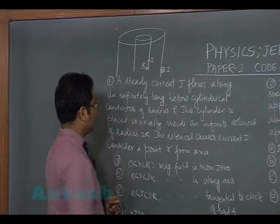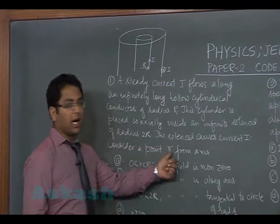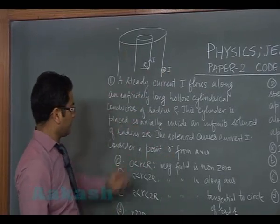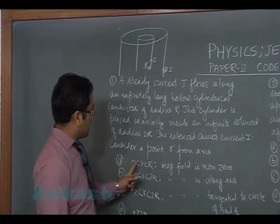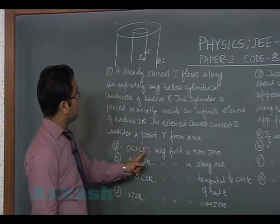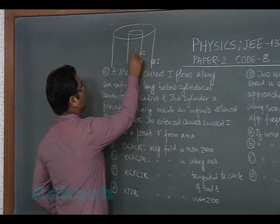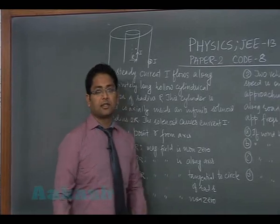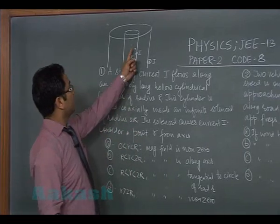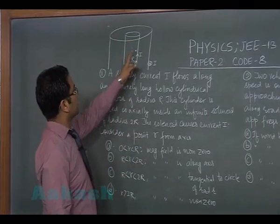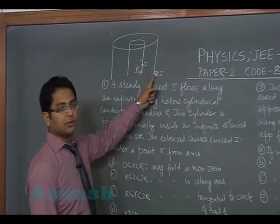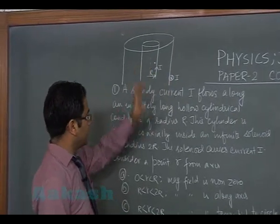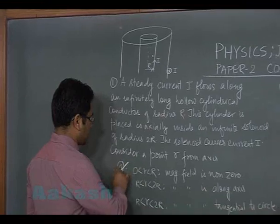Now we need to consider a point r from the central axis where r is greater than 0 and less than r. That means from the axis we are here somewhere. The magnetic field is non-zero - that's true. Here due to the cylindrical conductor the field is zero, but due to the solenoid inside, the field is non-zero. Therefore option A would be correct.